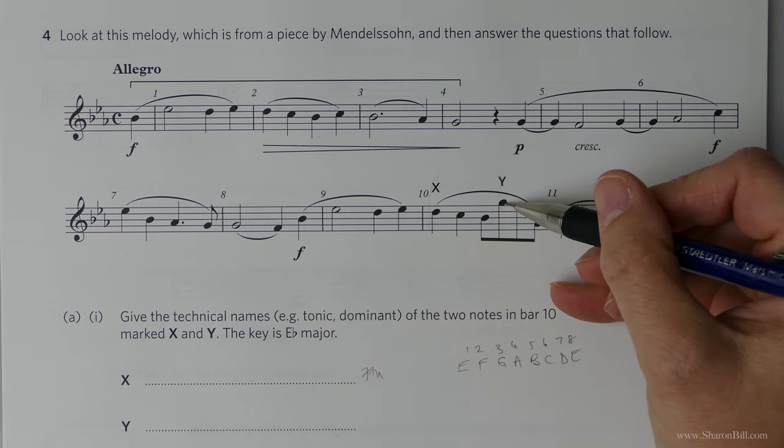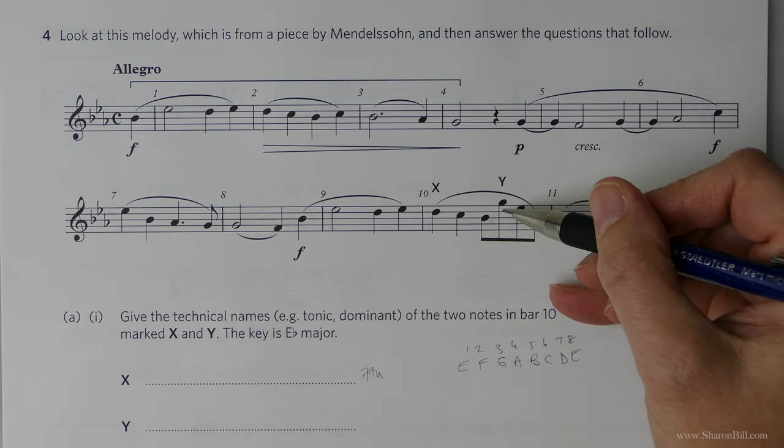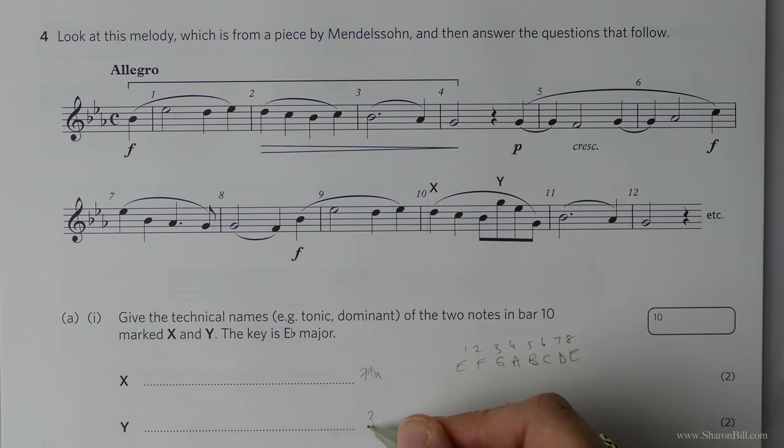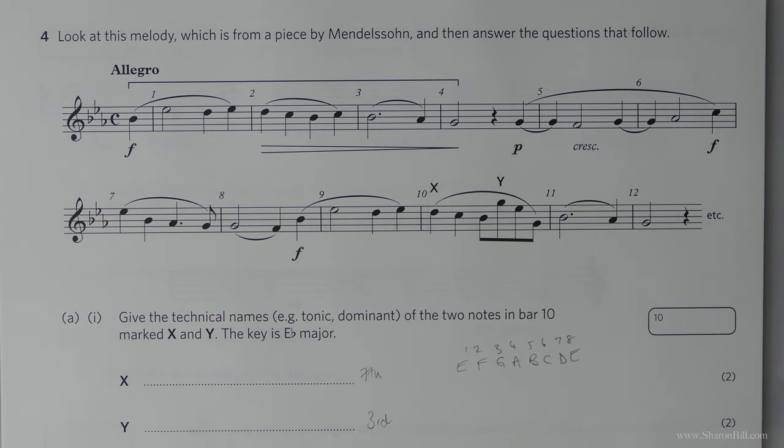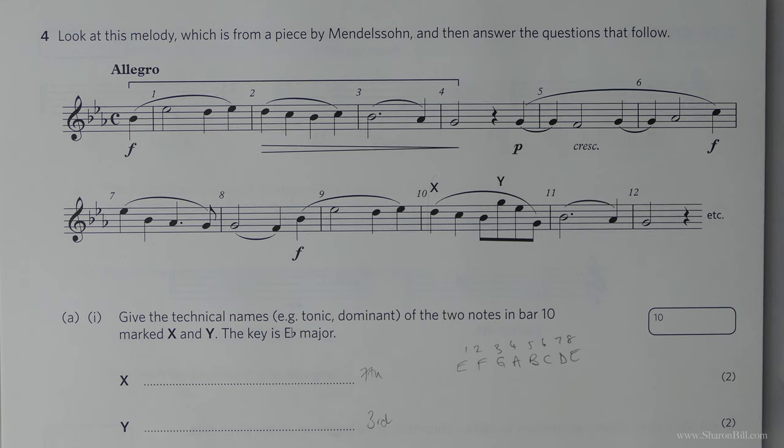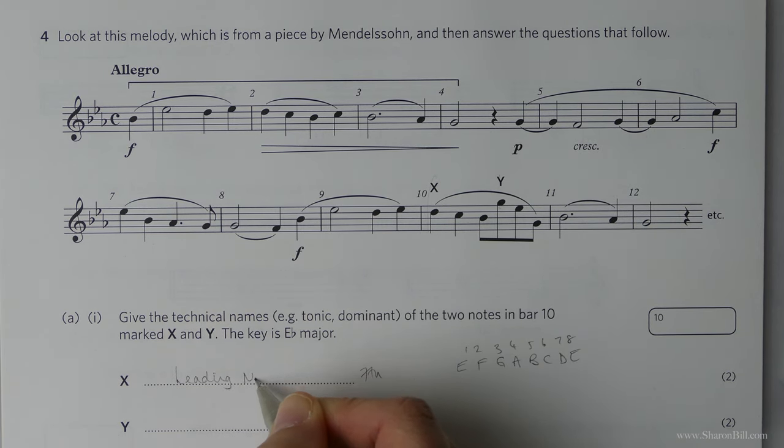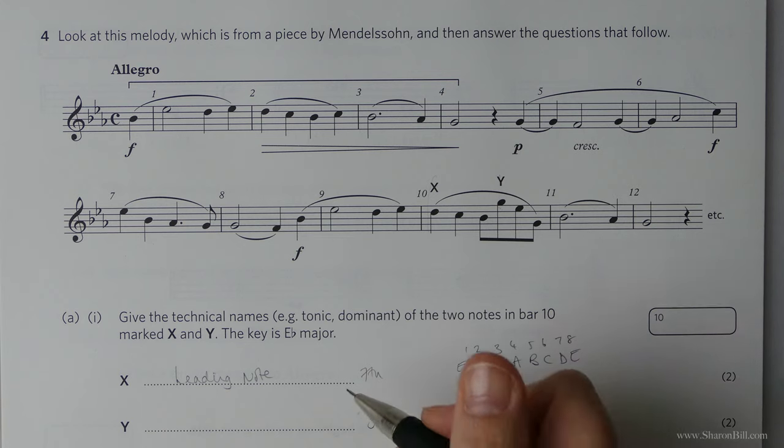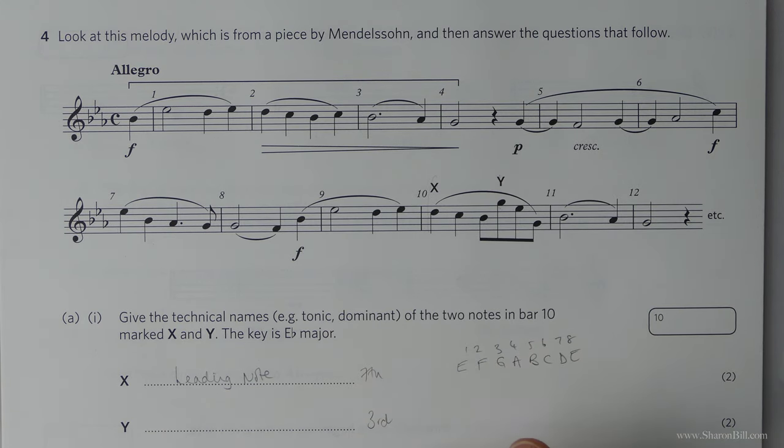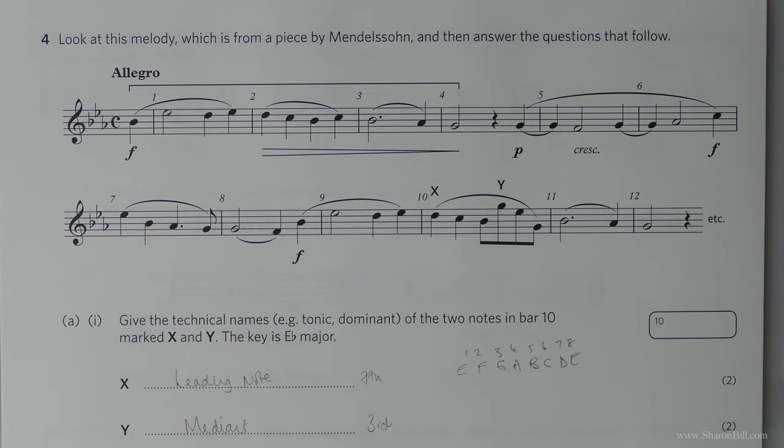And then this is a G. We can see 1, 2, 3, that's a third. Now we just need to give these their technical names. The seventh degree of the scale is called the leading note because it leads to the tonic. And then we have the mediant, that's the third, the middle note of your triad.